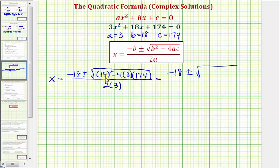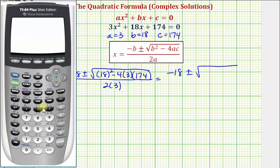Let's find this value, which is called the discriminant, on the calculator. So we'd have 18 squared minus four times 3 times 174.